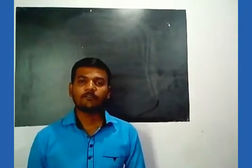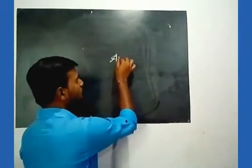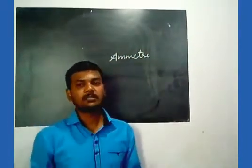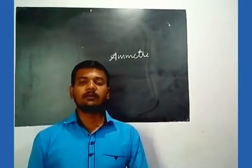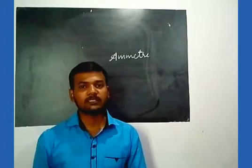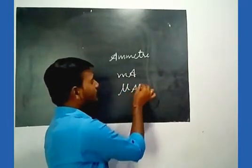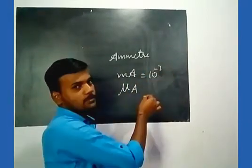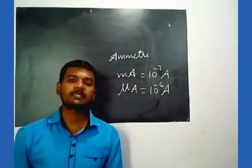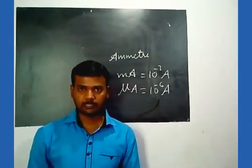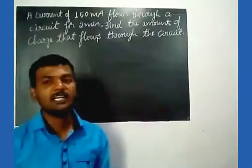The flow of electric current is measured by using a device called an ammeter — a device which measures the flow of electric current in a conductor. The smallest units of electric current are milli ampere and micro ampere. Milli ampere means 10 to the power minus 3 ampere, and micro ampere means 10 to the power minus 6 ampere. These points you have to remember, as they will be helpful in solving the problems.